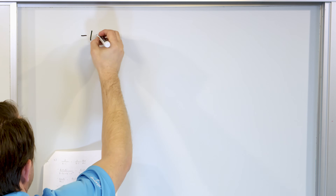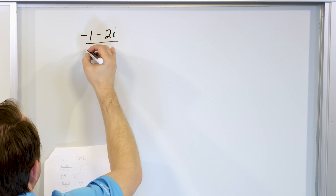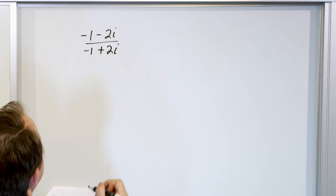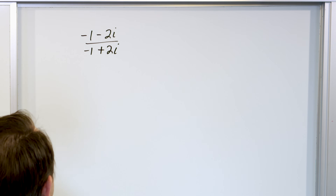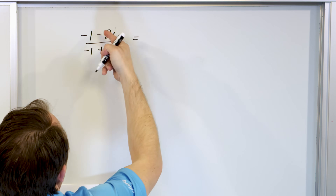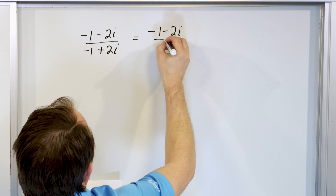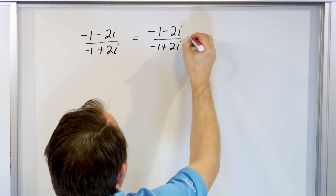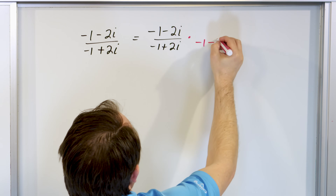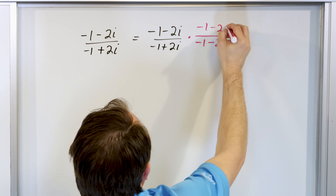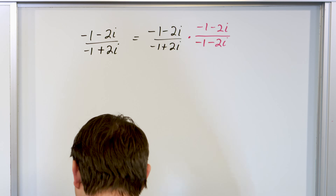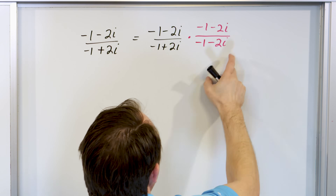Last problem. We have negative one minus two i on top and negative one plus two i on the bottom. Interestingly this is the conjugate of the other — we have a conjugate in the numerator and in the denominator. What do we do? We can't simplify top or bottom, so we rewrite and multiply by the conjugate of the bottom: negative one minus two i over negative one minus two i.